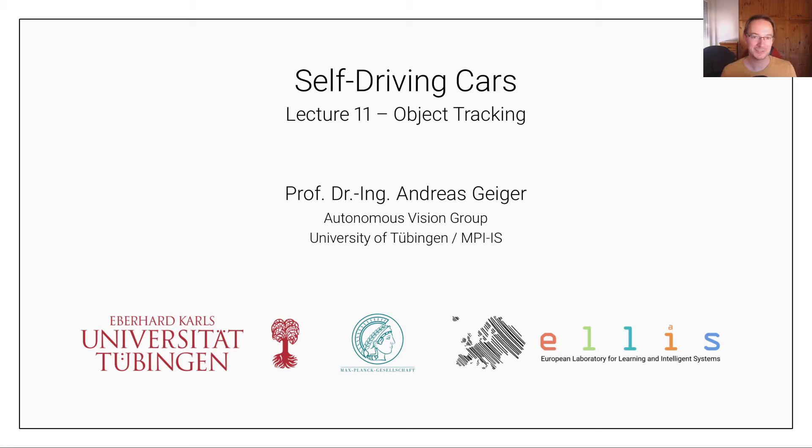Welcome back to Self-Driving Cars, lecture number 11 on object tracking. In the last unit, we learned about various algorithms for object detection, both in two-dimensional image space and in three-dimensional space. But of course, detecting objects independently in each frame is not sufficient to understand what objects are doing, where objects are heading. And so what we need in addition is to associate these detections over time. And this is what object tracking is about, estimating the state of objects over time and associating new observations in new frames to existing object tracks.